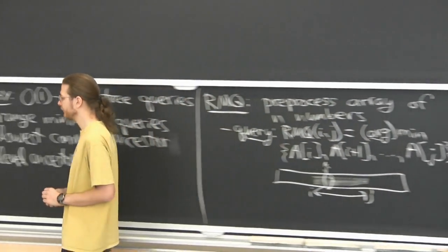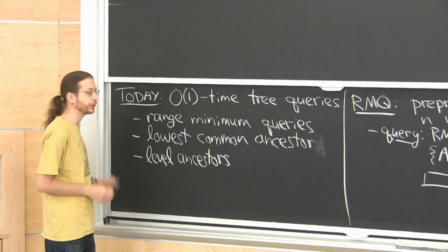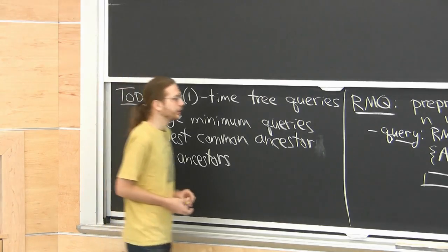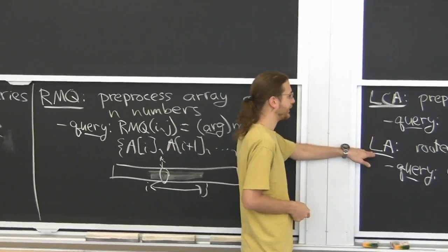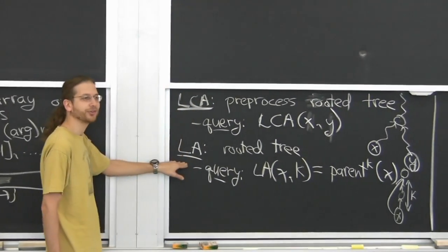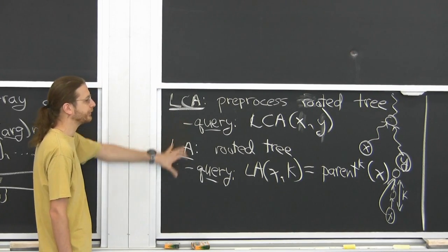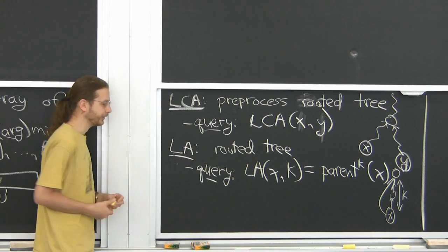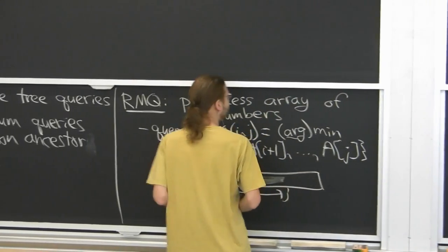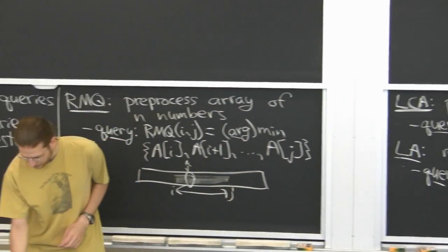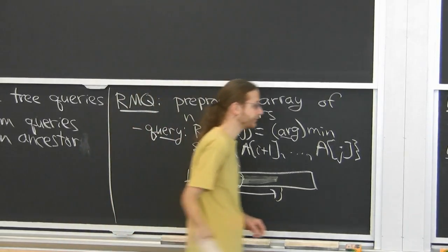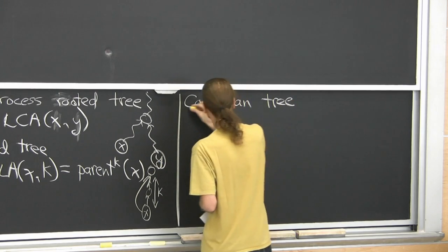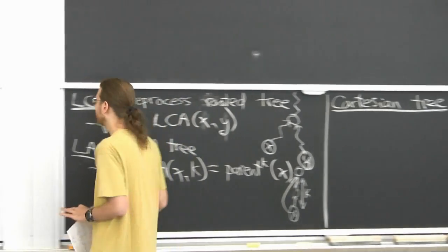We'll use a nice technique called table lookup, which is generally useful for a lot of data structures. We are working in the word RAM throughout, though it's not as essential as it has been in our past integer data structures. LCA and LA look quite similar — they even share two letters out of three — but they're quite different; you need fairly different techniques to deal with both. RMQ, on the other hand, turns out to be basically identical to LCA, which is the more surprising thing.